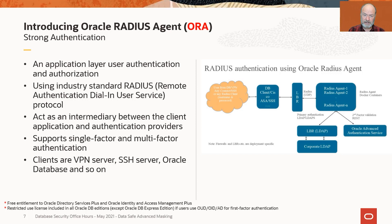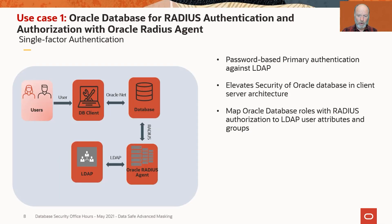I tend to talk about the Radius Agent in terms of the database because that's my focus — I'm the database security product manager. But Radius is a really common protocol; it's used for operating system authentication, switches and routers. From a use case standpoint, we really think there are two use cases that are going to be interesting with this new Radius Agent. One of them is connecting the Oracle database to Microsoft Active Directory.